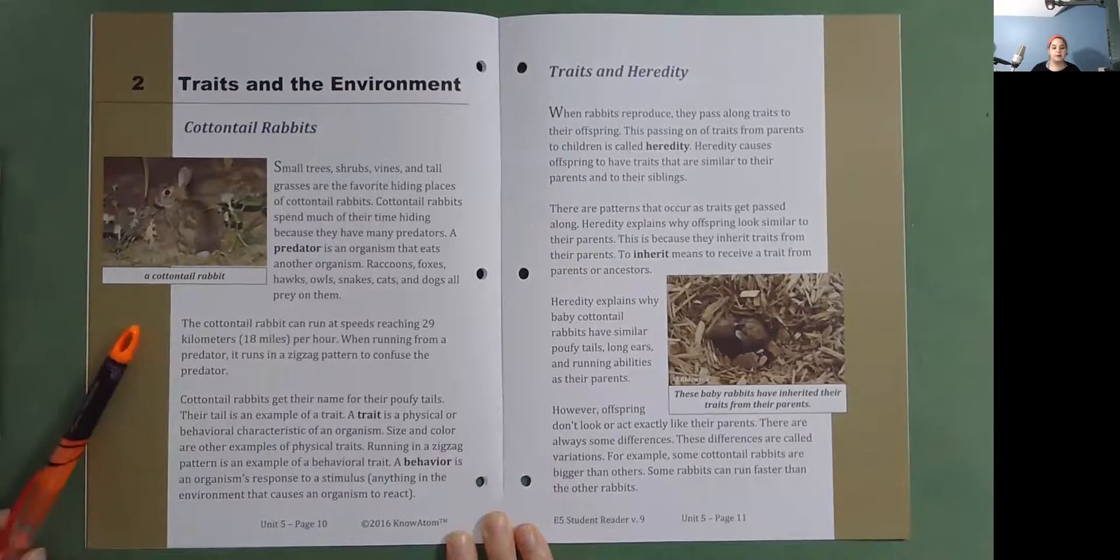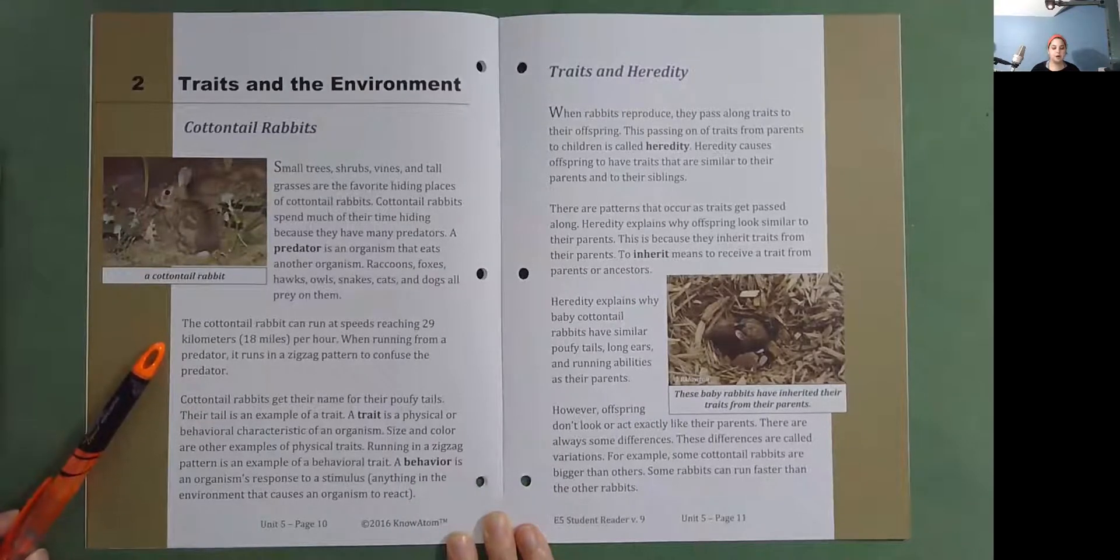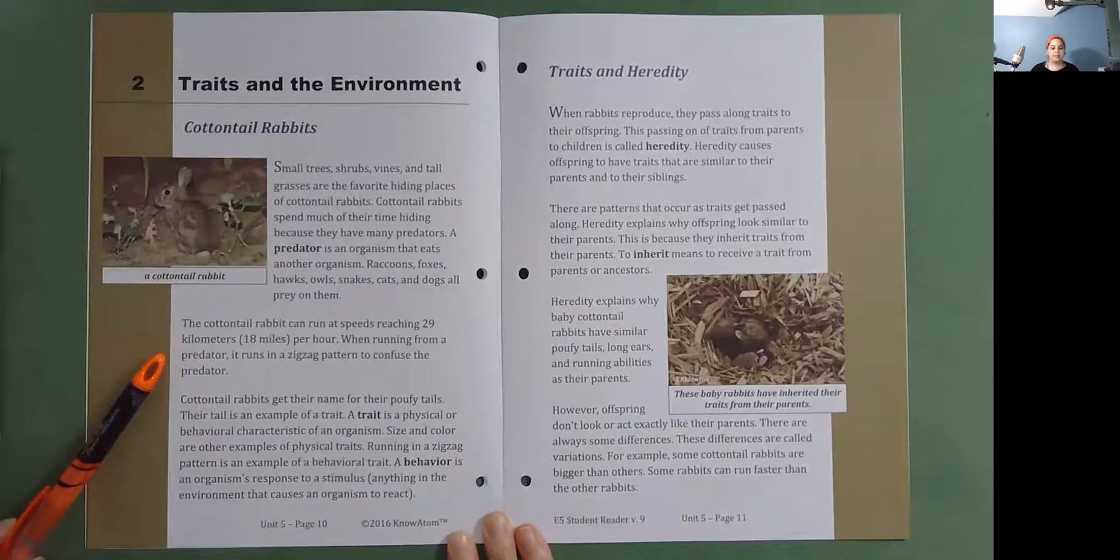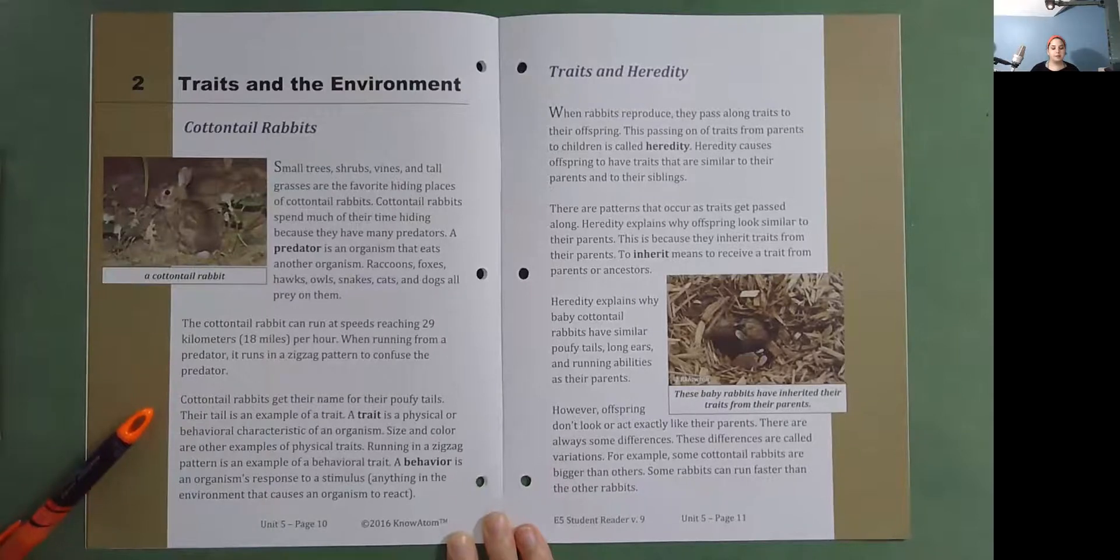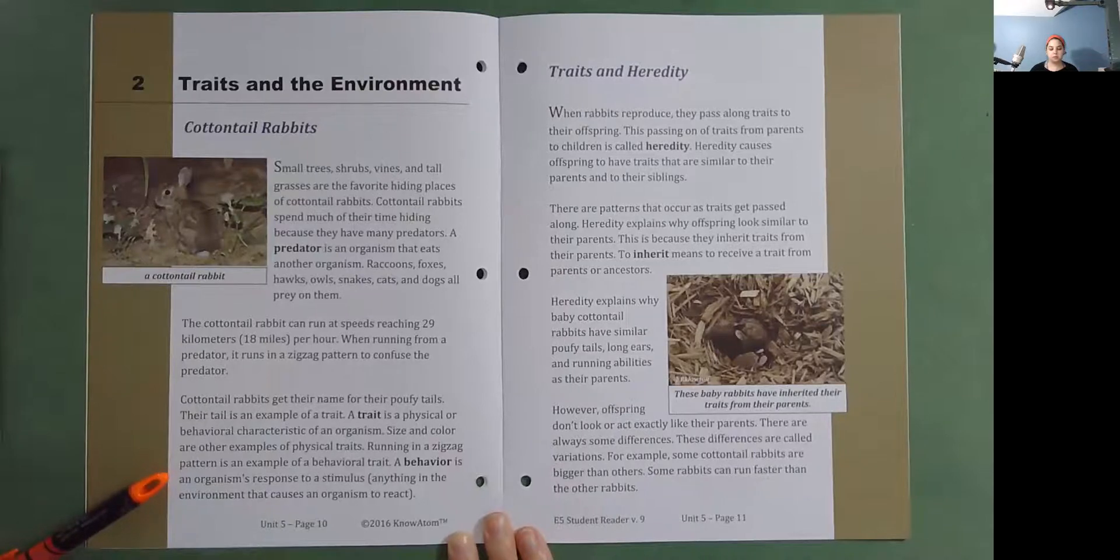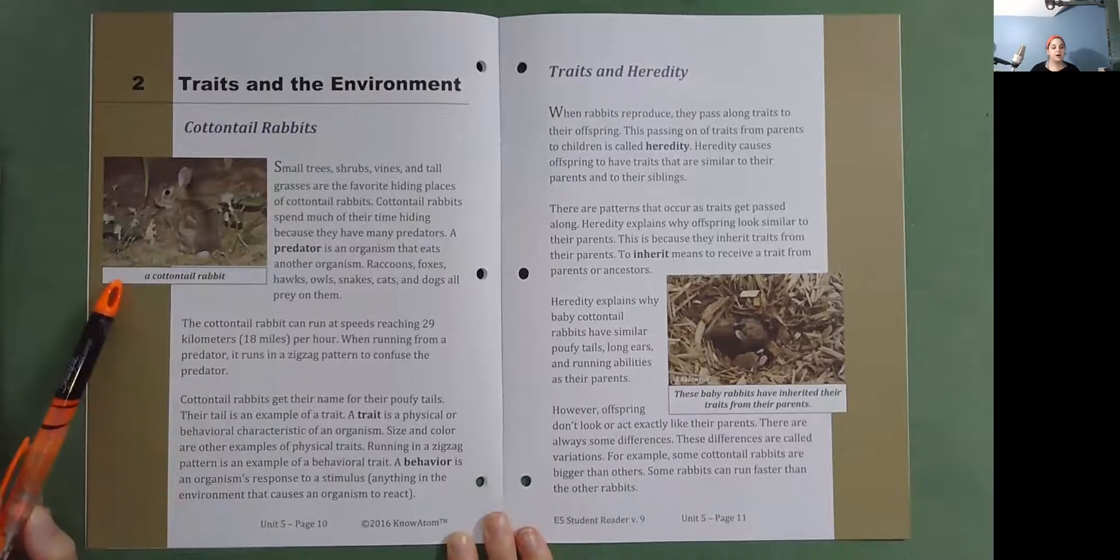The cottontail rabbit can run at speeds reaching 29 kilometers or 18 miles per hour. When running from a predator, it runs in a zigzag pattern to confuse the predator. Cottontail rabbits get their name for their poofy tails. Their tail is an example of a trait. A trait is a physical or behavioral characteristic of an organism. Size and color are other examples of physical traits. Running in a zigzag pattern is an example of a behavioral trait. A behavior is an organism's response to a stimulus, anything in the environment that causes an organism to react.